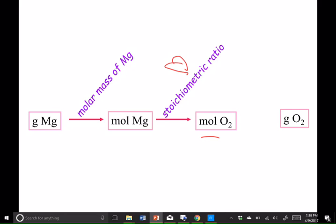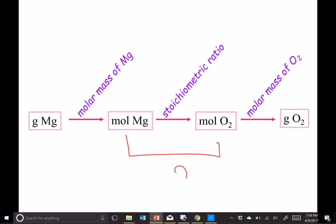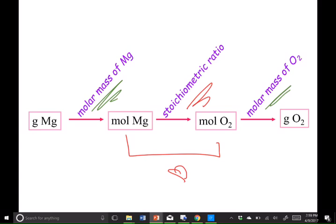Once you have moles of oxygen, to get all the way to grams of oxygen, you're going to have to use the molar mass of oxygen. We talked about how you'll need the molar mass of O2 using the periodic table, taking two times the decimal number for oxygen. So we have a front end molar mass, the stoichiometric ratio as the heart, and a molar mass on the back end.